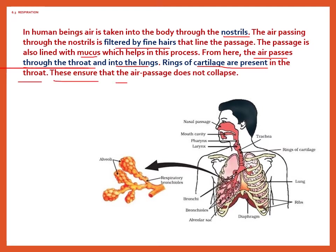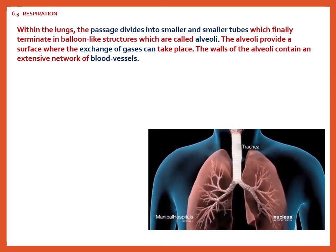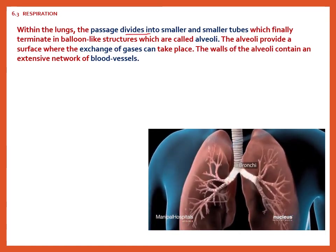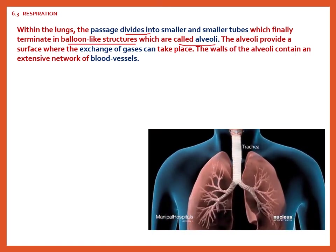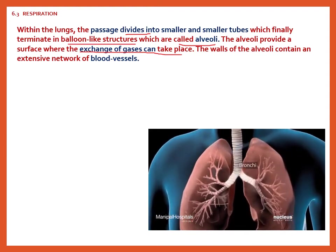The rings of cartilage ensure that the air passage does not collapse. Air enters through the nostrils, goes into the fine-lined nasal passage, and the ring-like cartilage structure keeps the airway from collapsing or breaking. Within the lungs, the passage divides into smaller tubes that finally terminate in balloon-like structures called alveoli. The alveoli provide a surface where the exchange of gases takes place. The wall of the alveoli contains an extensive network of blood vessels.